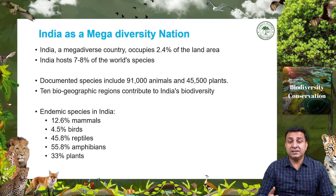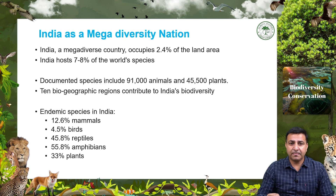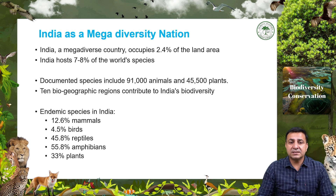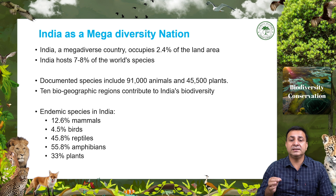India is one of these mega diverse countries, with 2.4 percent of the land area accounting for 7 to 8 percent of the species of the world, including about 91,000 species of animals and 45,500 species of plants documented across its 10 biogeographic regions. Of these, 12.16 percent of mammals, 4.4 percent of birds, 45.8 percent of reptiles, 55.8 percent of amphibians, and 33 percent of Indian plants are endemic, found nowhere else in the world.